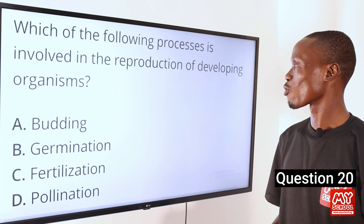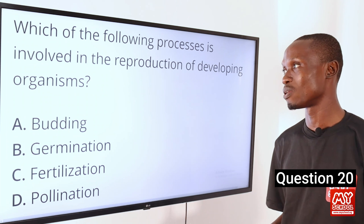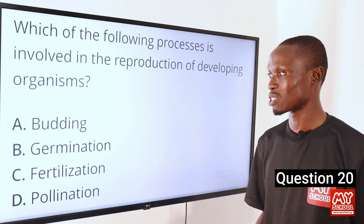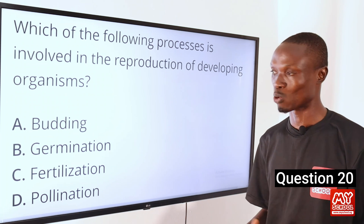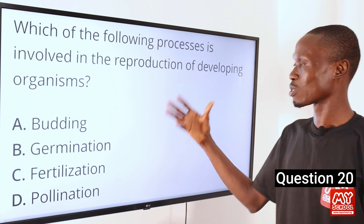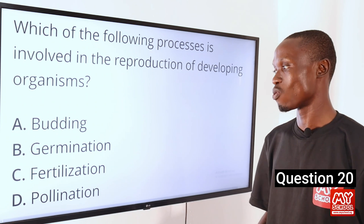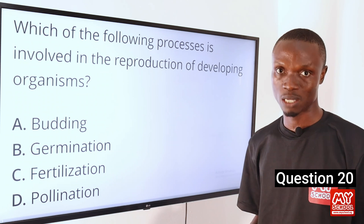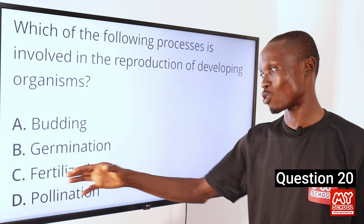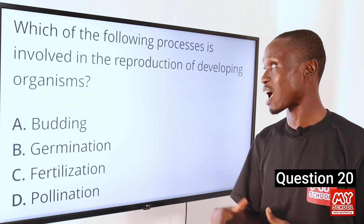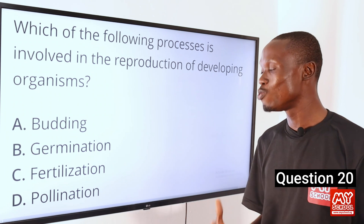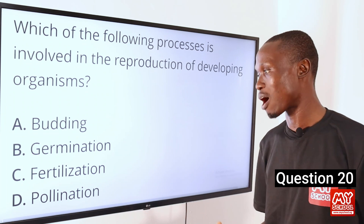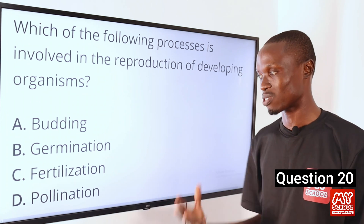Question 20. Which of the following processes is involved in the reproduction of developing organisms? A, budding — the formation of an outgrowth from an organism. B, germination — the sprouting of a dormant seed. C, fertilization — the union of male and female gametes to produce a zygote, which initiates the production of new organisms. D, pollination — the transfer of pollen grains from the anther to the stigma of a flower. The answer is option C, fertilization.